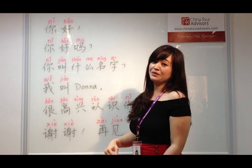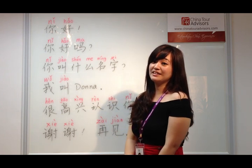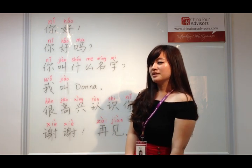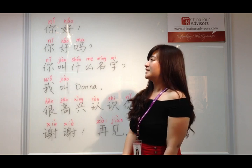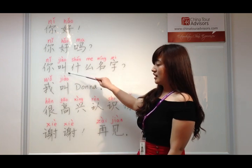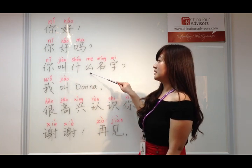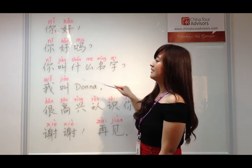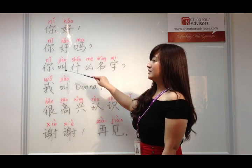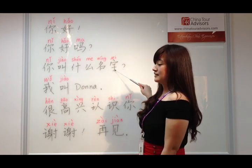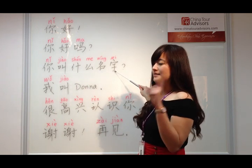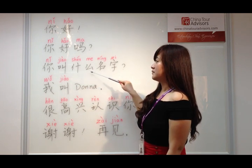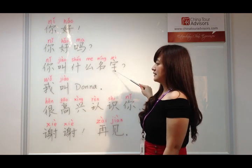So now you know how the person is, you want to ask for their name. So how do we say that? We say 你叫什么名字. Repeat after me: 你叫什么名字. One last time: 你叫什么名字.